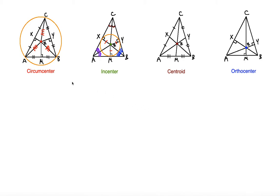How do you tell the difference between circumcenter, incenter, centroid, and orthocenter? The first thing about the circumcenter is that it is the center point. What makes it a center is that 'circum' means there will be a circle circumscribing this triangle. In other words, circumscribing means that the vertices of triangle ABC are on the circle — not inside, not outside, but on the circle. The circumcenter is the center of that circle.